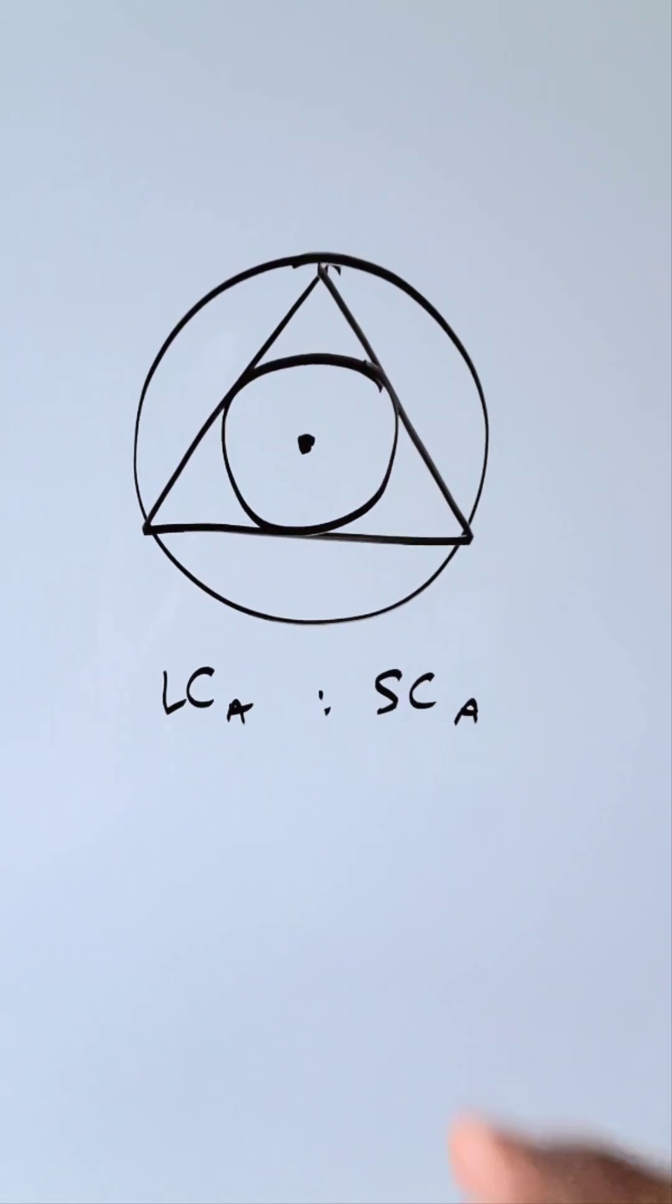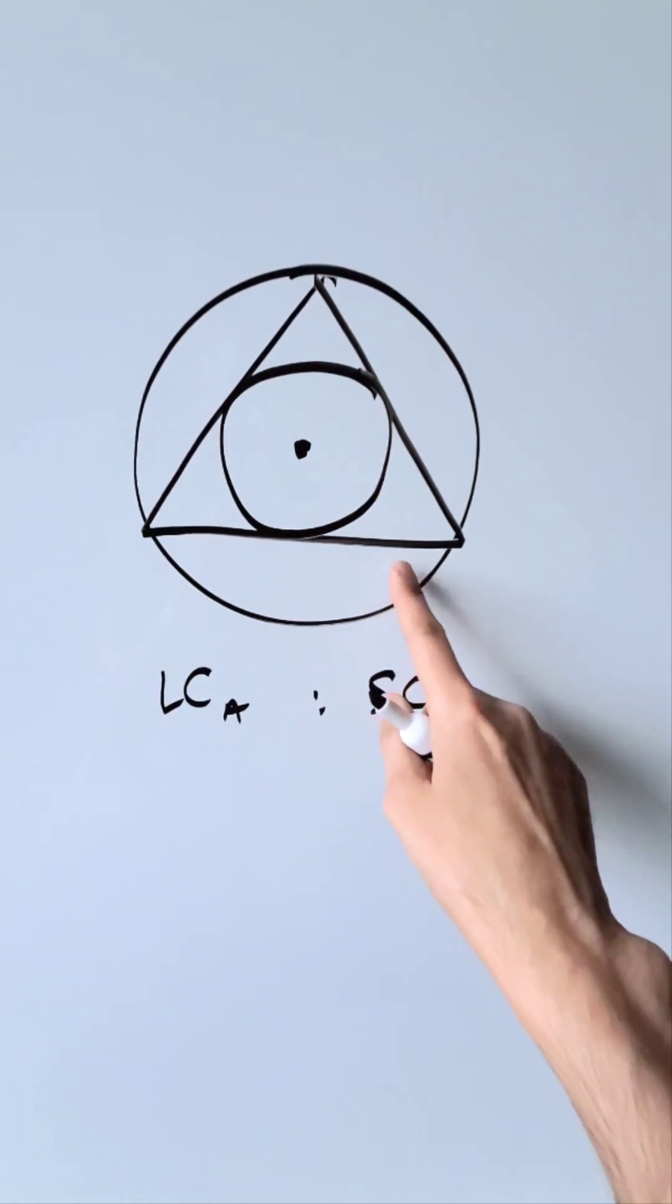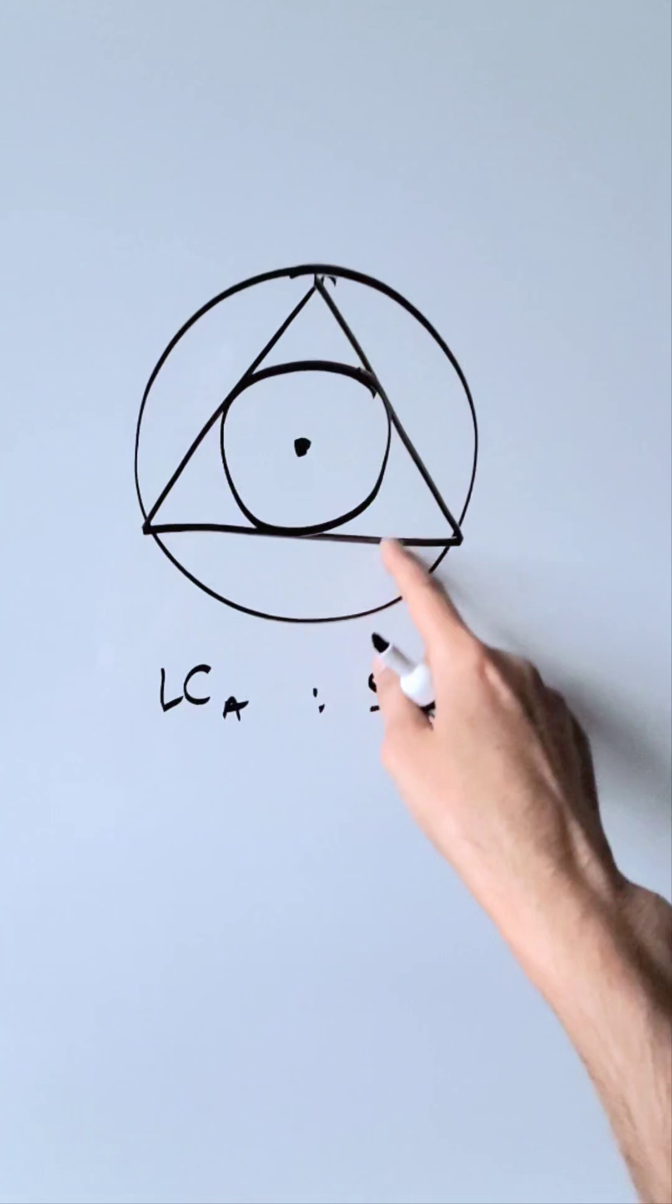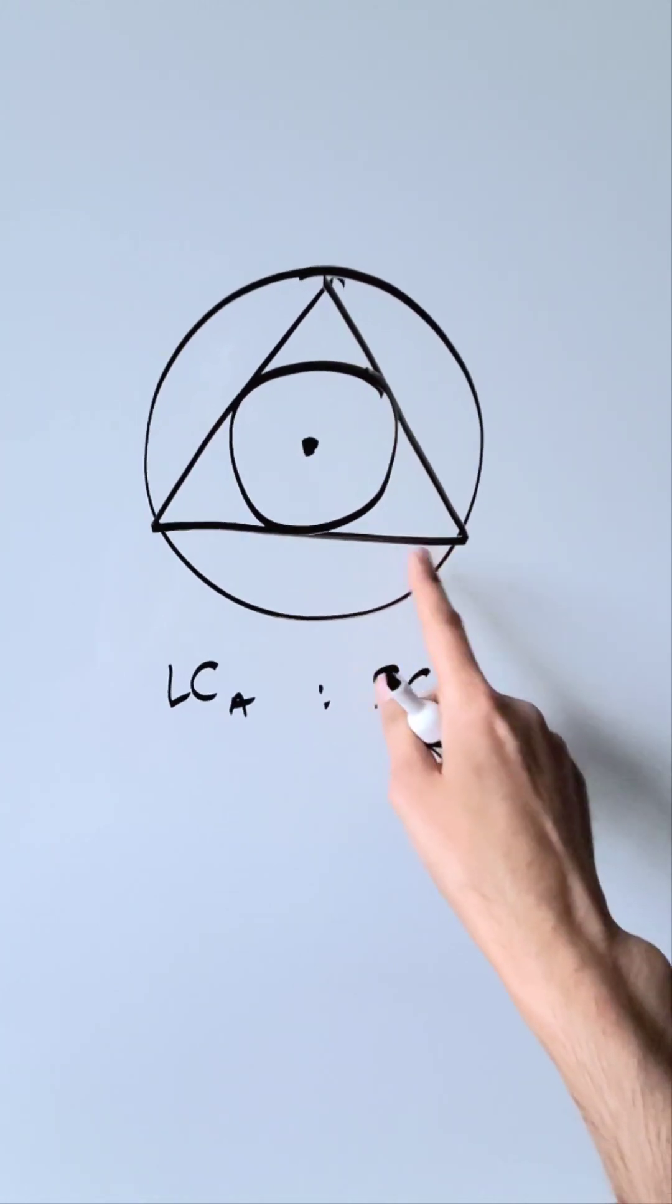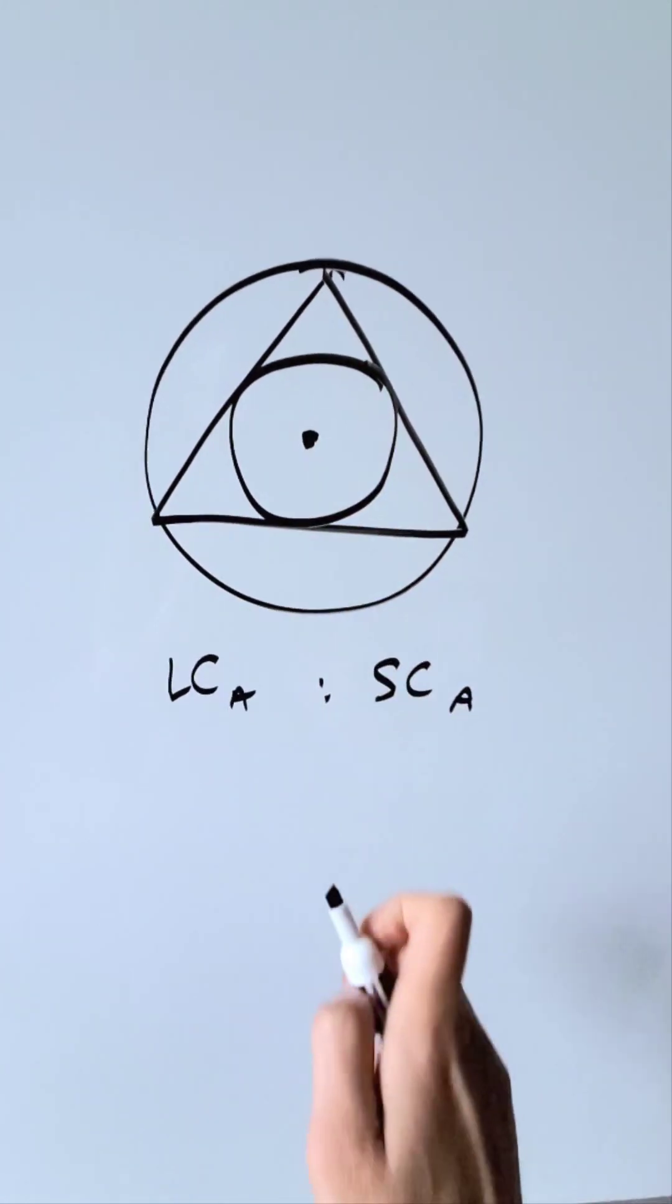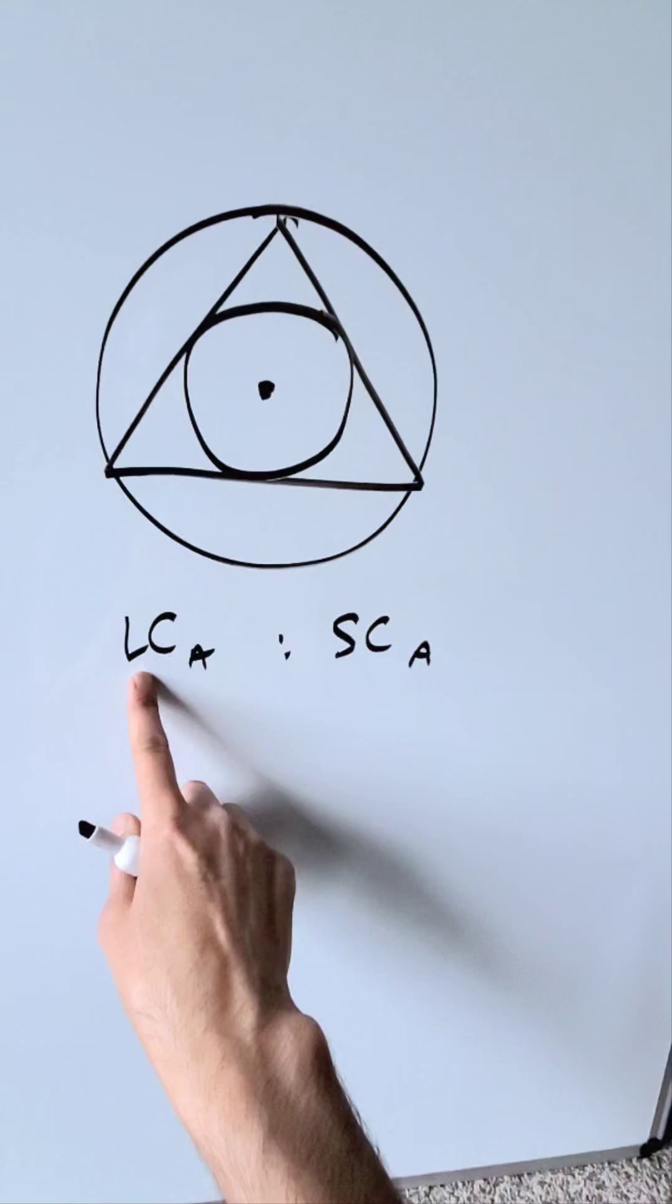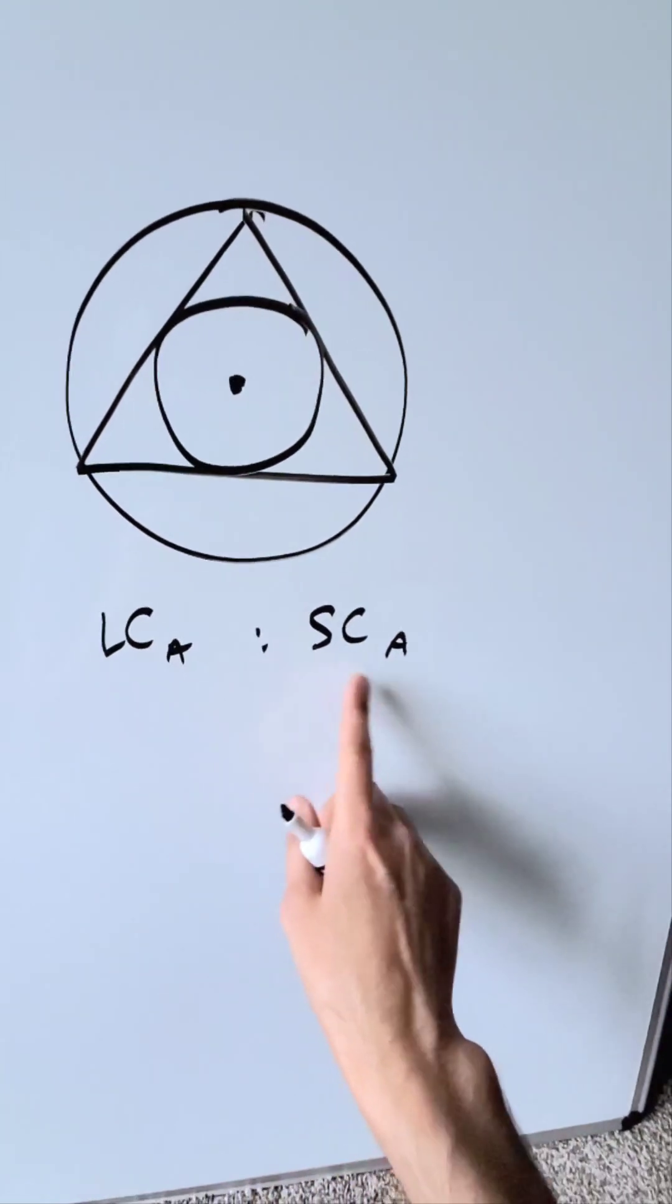We have here an interesting geometry question. I have a large circle. Inscribed within that is an equilateral triangle. Inscribed within that is a smaller circle. The two circles are concentric. They share a common center. What is the ratio of the large circle area to the small circle area?